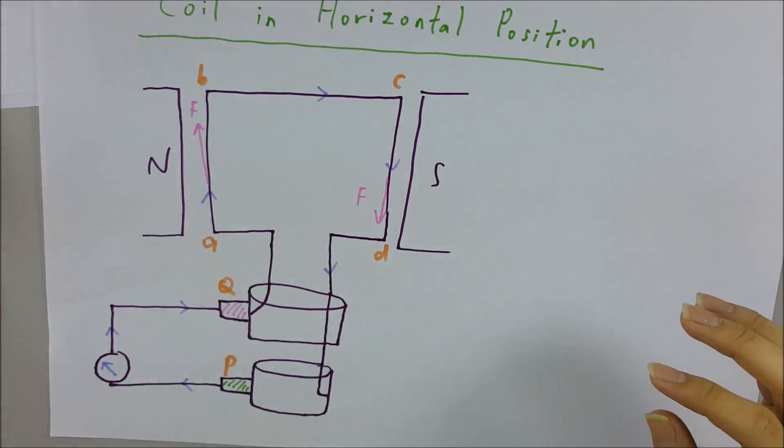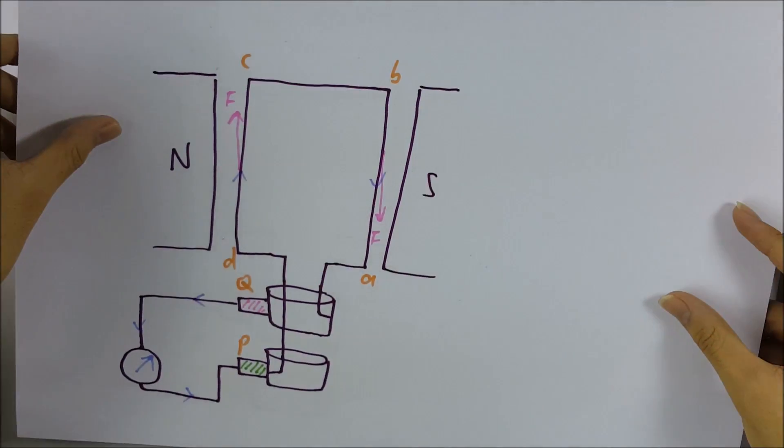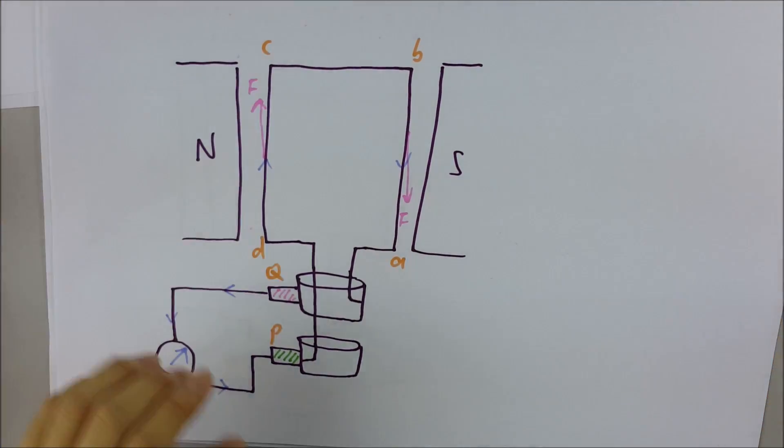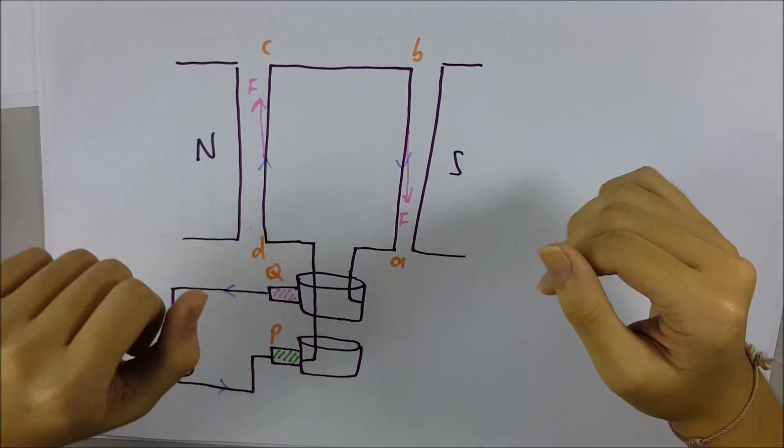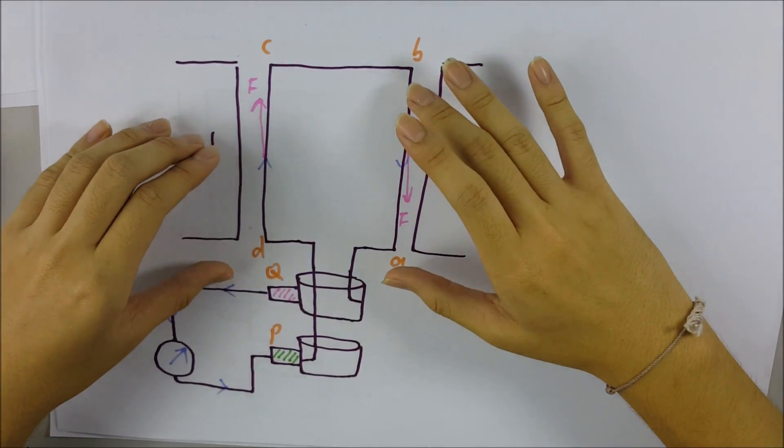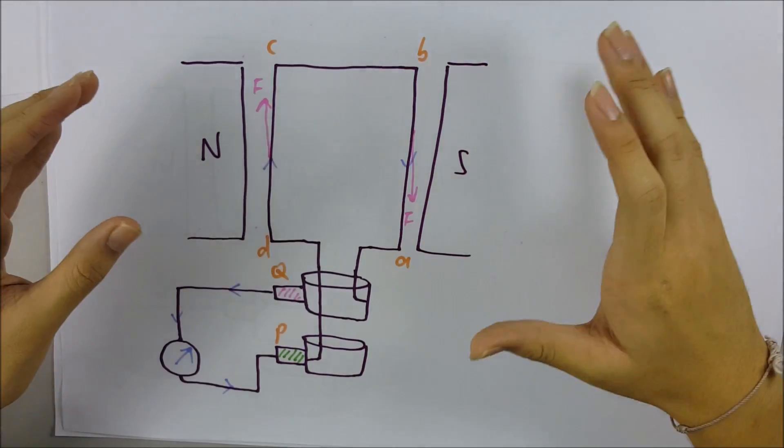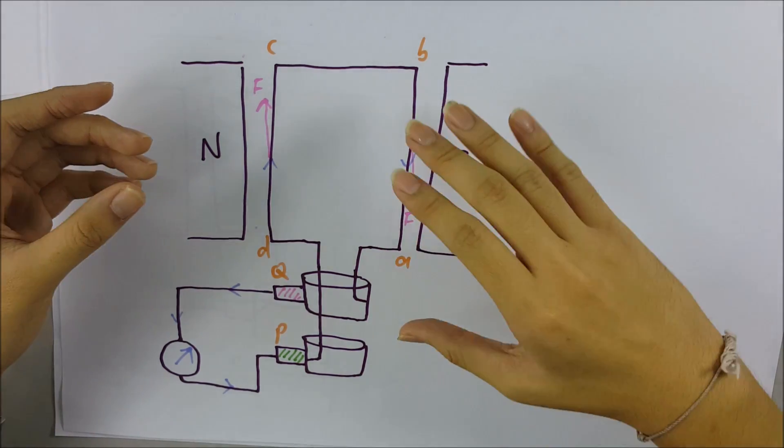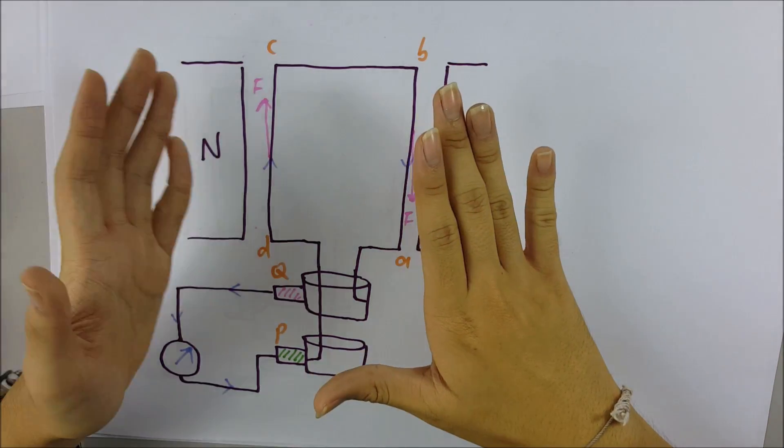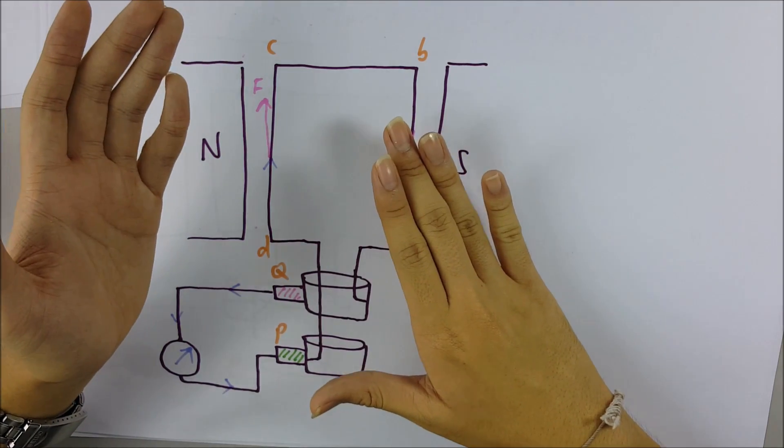So now the second position is quite similar with the previous one. The side AB moves downwards. It continues to turn in a clockwise direction, but the side AB moves downwards and the side CD moves upwards, cutting across the magnetic field lines again.